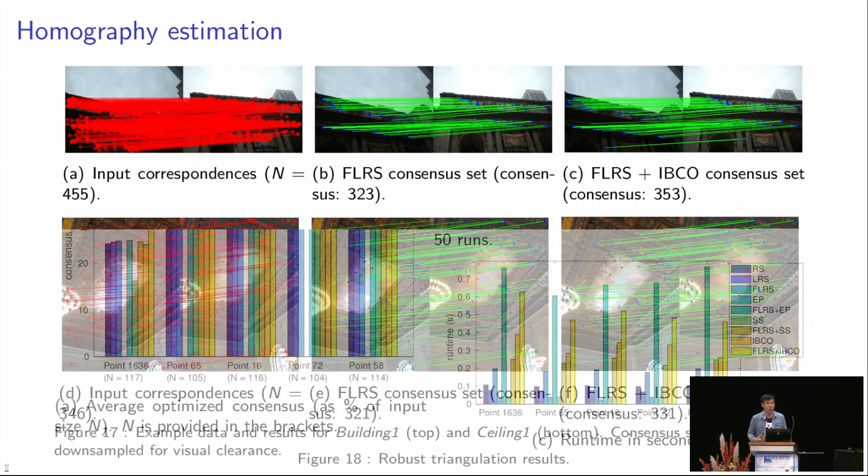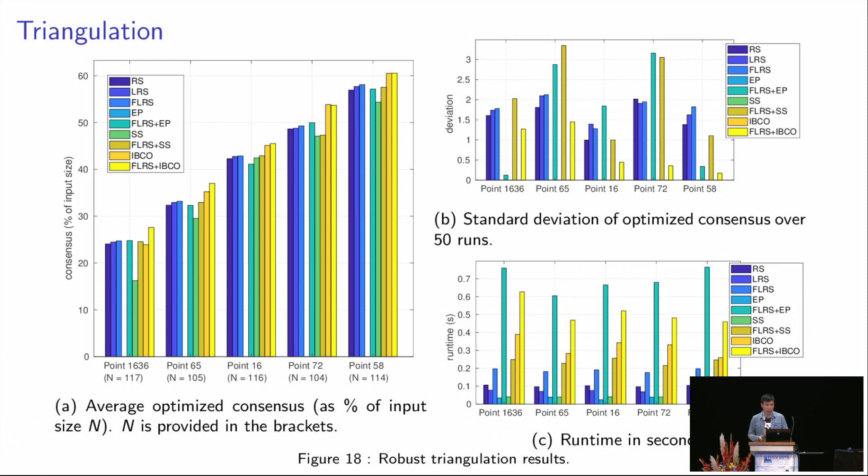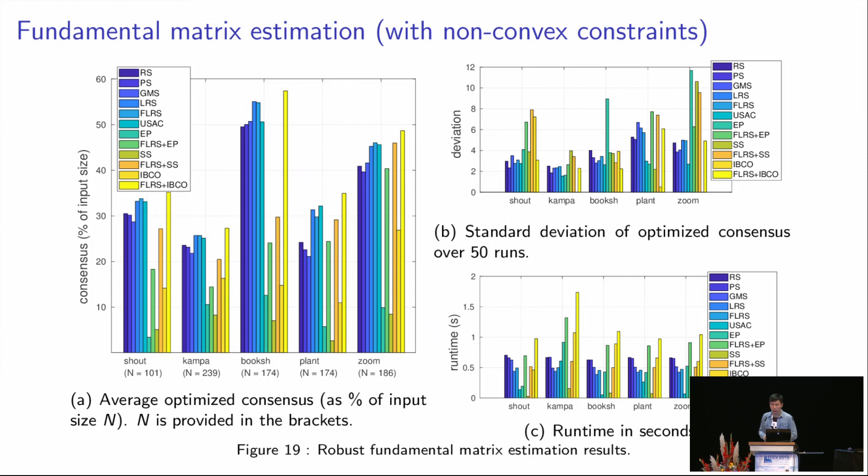In triangulation application, we observe a similar situation, while in some difficult data, we can see that using a better initialization actually helps for our algorithm. We also perform experiments on fundamental matrix estimation. For this problem, the model needs to satisfy a non-convex rank 2 constraint. Therefore, to conduct convex optimization in those deterministic methods, we first ignore the rank 2 constraint. And then after optimization, we enforce the rank 2 constraint back using SVD. Surprisingly, our method is the only deterministic method that can still significantly improve the result of fixing low ransack.